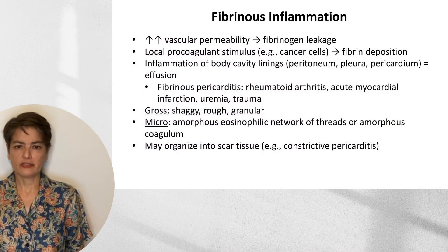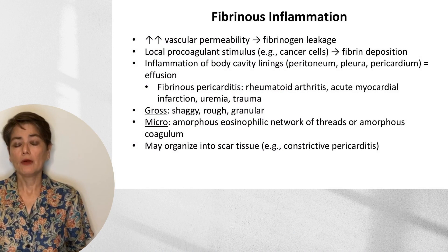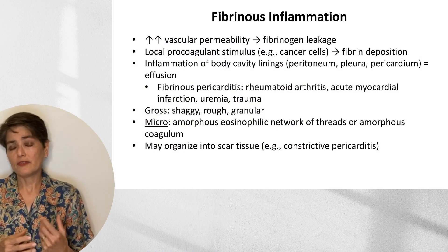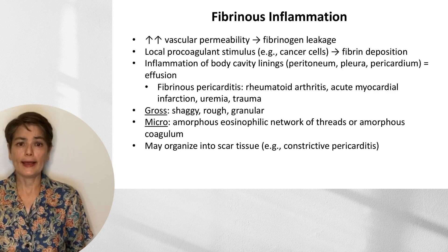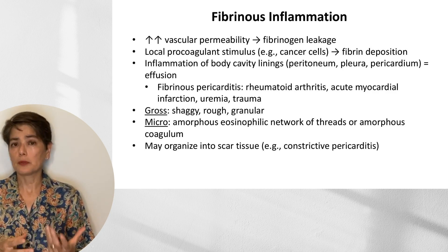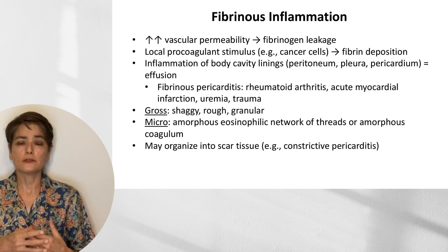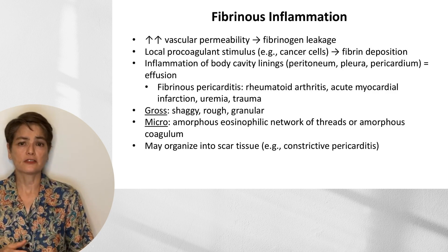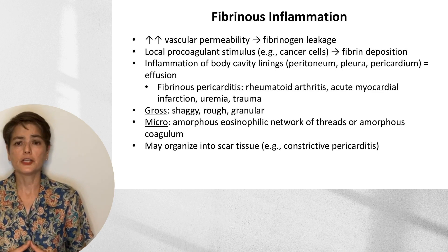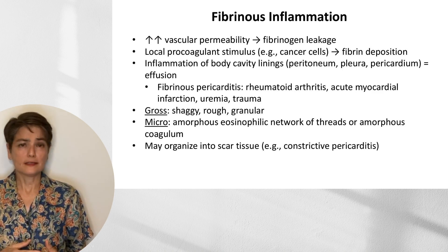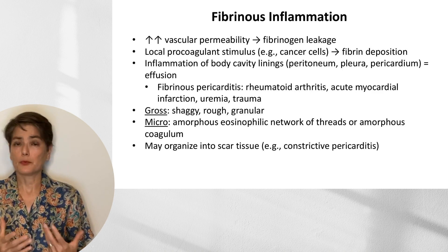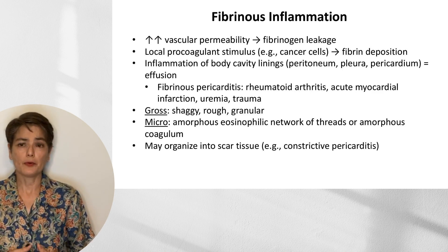Now let's talk about fibrinous inflammation. In serous inflammation we had increased vascular permeability, but in fibrinous inflammation we have a lot more permeability. This allows larger plasma proteins to exit the vessel, and we can get proteins such as fibrinogen in the extravascular tissue. When that is combined with a local procoagulant stimulus — for example, cancer cells — we will get fibrin deposition.